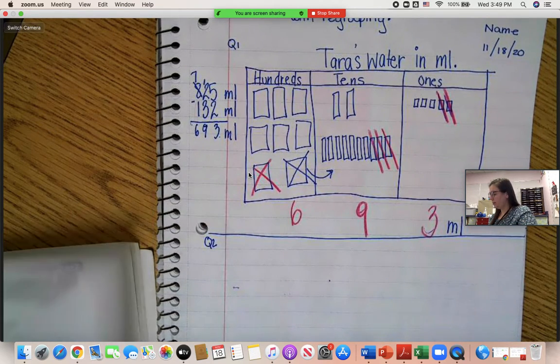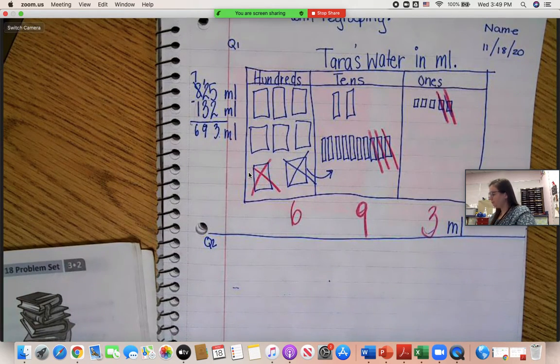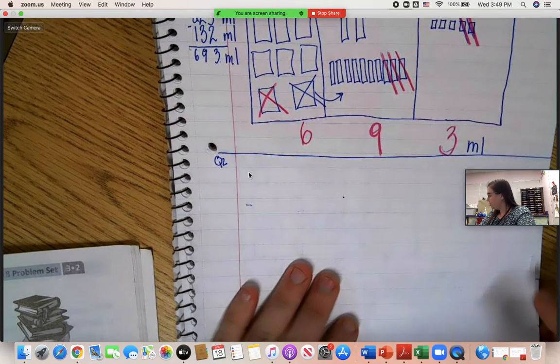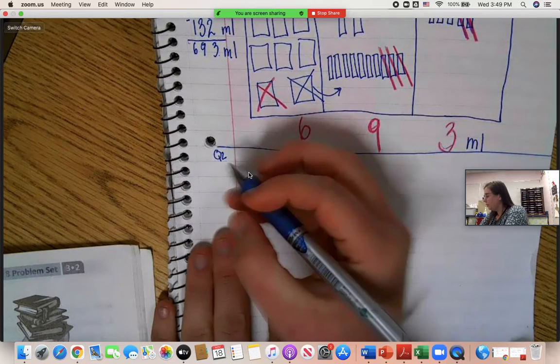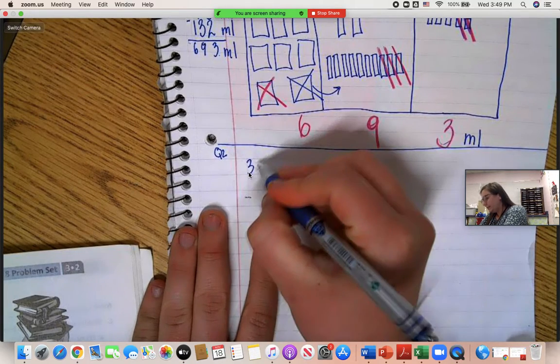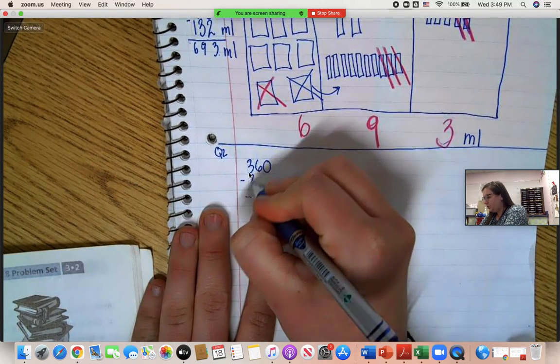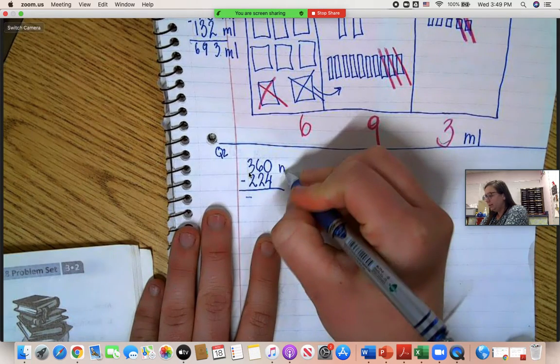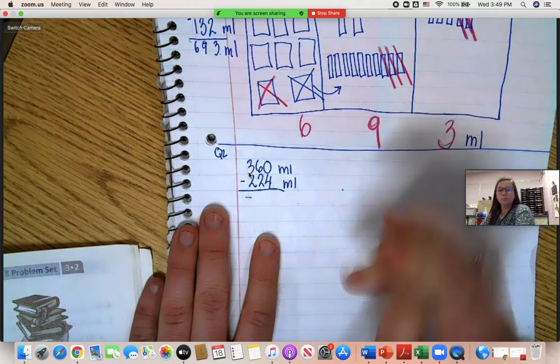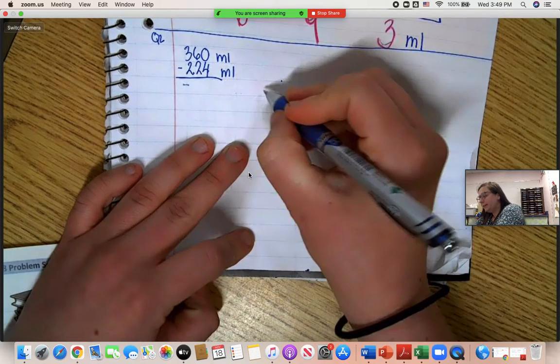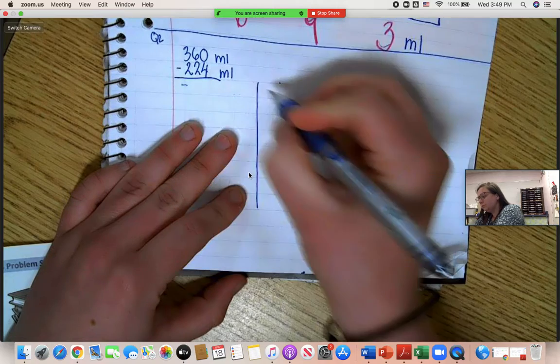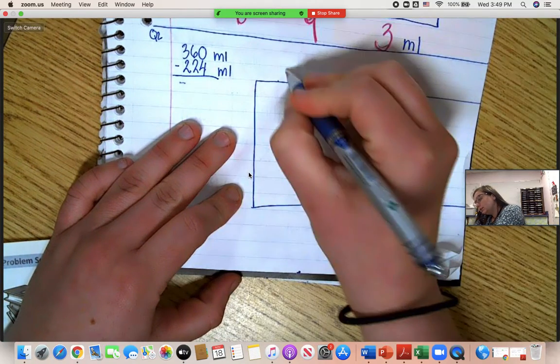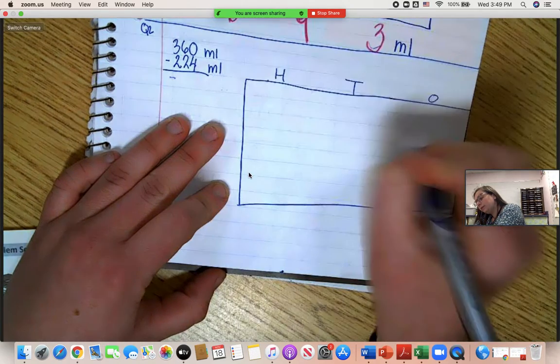Once you have that, go down to the next quadrant. And let's try 360 minus 224 milliliters. Okay, now I'm going to do the same thing I did at the top. Hundreds, tens, ones.